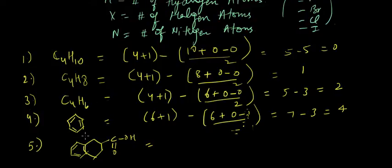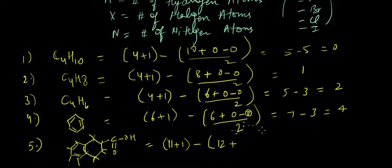What is the DBE of this compound? Number of carbon atoms are 6, 7, 8, 9, 10, 11—so 11 plus 1 minus the number of hydrogen atoms: 1, 2, 3, 4, 5, 6, 7, 8, 9, 10, 11, 12, plus X is 0, N is 0, divided by 2. It gives me DBE of 12 minus 6, which is 6.